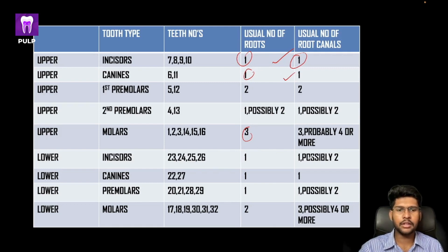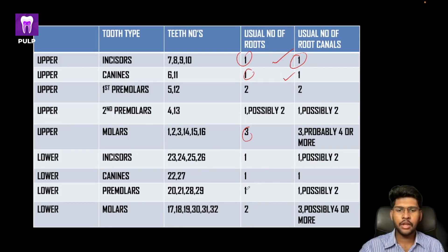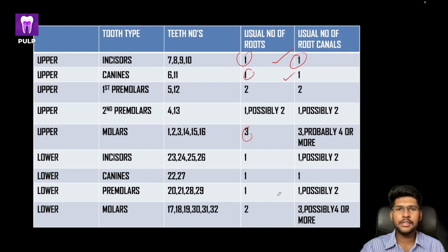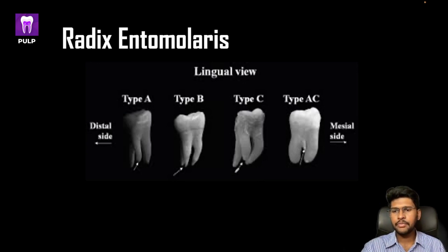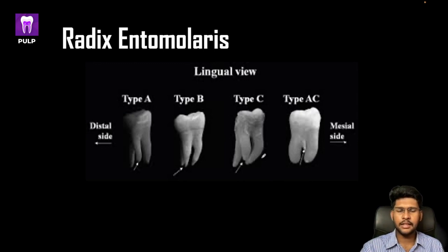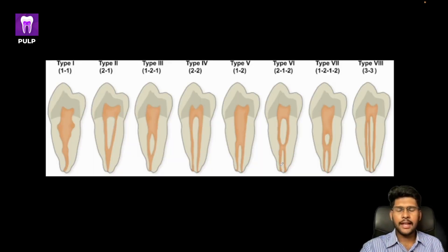For lower incisors, we generally have a single root but two canals in most cases with a type 2 configuration. Lower canines generally have one root and one canal. Lower premolars have one root and possibly two canals. Lower molars have two roots and in most cases three canals, but sometimes four or even five. The most notable variation is in the mandibular first molar — radix intermolaris — meaning an extra root, classified into four types: type A, type B, type C, and type AC.